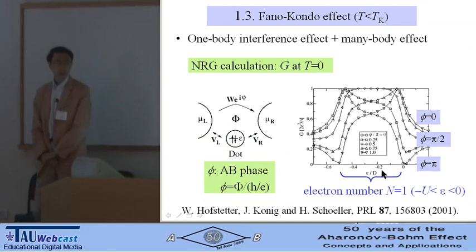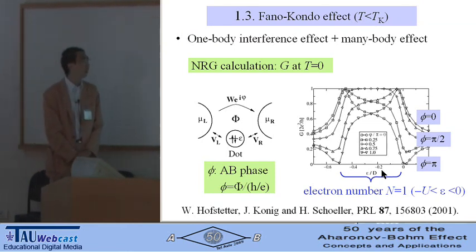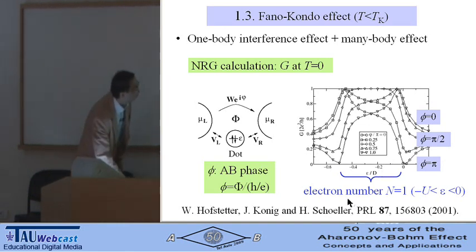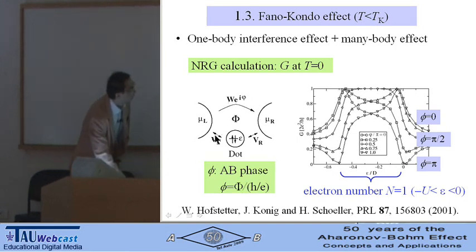In the presence of the Kondo effect, we have one-body interference effect, so Fano effect, and also many-body resonant effect, Kondo effect. This is the theoretical result by Hofstetter and co-workers using this model. Here, φ is the AB phase corresponding to the magnetic flux penetrating the ring. Conductance shows a Fano-like shape depending on the magnetic flux inside the quantum dot.